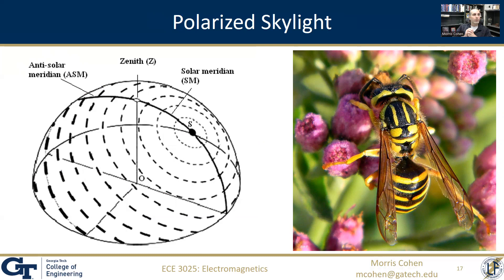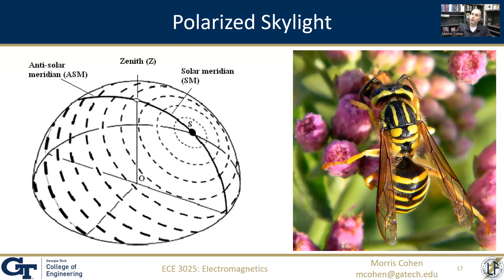So if you couldn't actually see the sun, but you had polarized glasses or could perceive polarization, you could figure out where the sun is and, based on time of day and season, navigate using that structure. It turns out certain insects, in particular honeybees, literally navigate using the fact that they can see polarization, whereas we humans cannot — we just see light and it all looks the same to us. But for certain animals, horizontal and vertical polarization looks slightly different, and they can tell the difference.